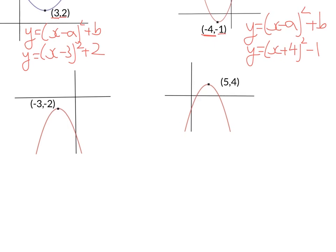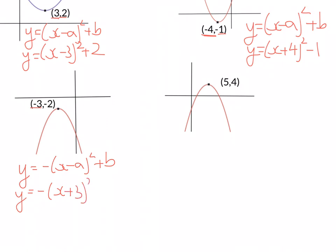The next one — we've got a sad curve. So, that's going to be of the form -(x - a)² + b. The x-coordinate goes inside the brackets and changes sign, so it's negative 3, now it's plus 3. And the y-coordinate goes outside the bracket.